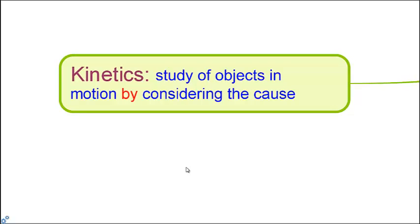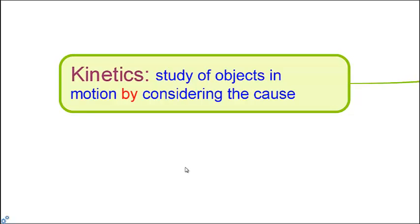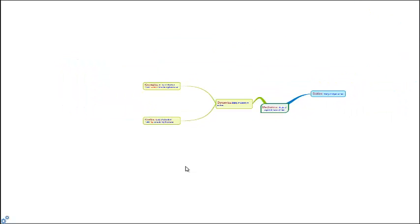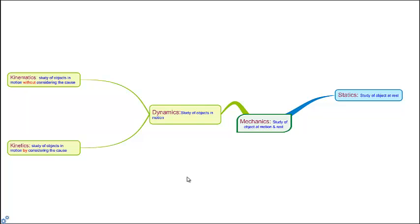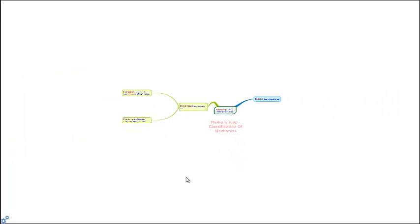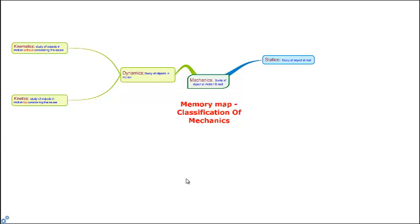Another branch of dynamics is called kinetics. It is the study of objects in motion by considering the cause of the motion. Now here we have the memory map on classification of mechanics.